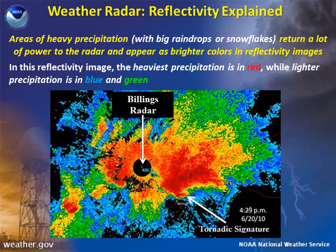The different colors that we see on reflectivity products represent the amount of power, which is measured in decibels, that is returned to the radar by an object. Areas of heavy precipitation with big raindrops, hailstones, or snowflakes return a lot of power to the radar and appear as brighter colors in reflectivity images.